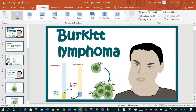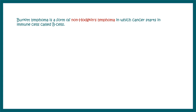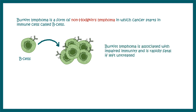In this video we'll talk about Burkitt lymphoma, which is a non-Hodgkin lymphoma that generally affects B cells, one type of immune cell. B cells overproliferate, divide rapidly, and become cancerous. Burkitt lymphoma is associated with impaired immunity and is fatal if not treated early. It is recognized as one of the fastest growing cancers in humans — it is really aggressive.